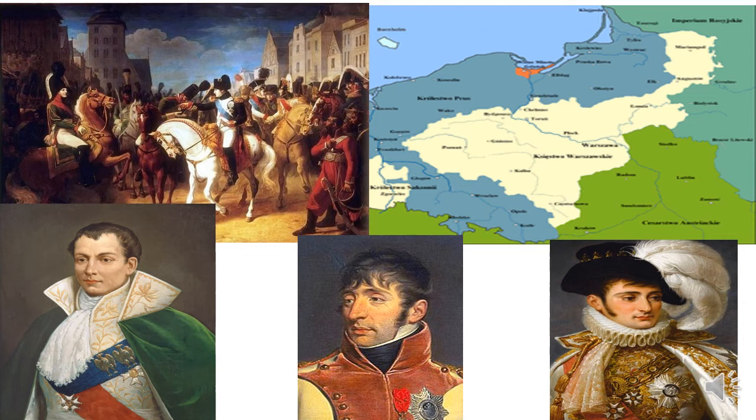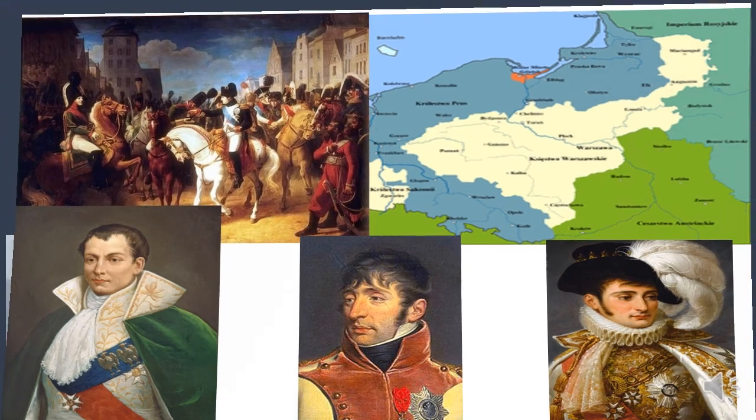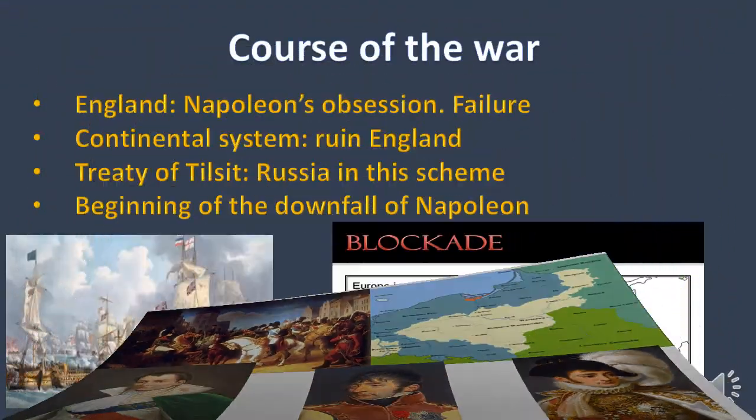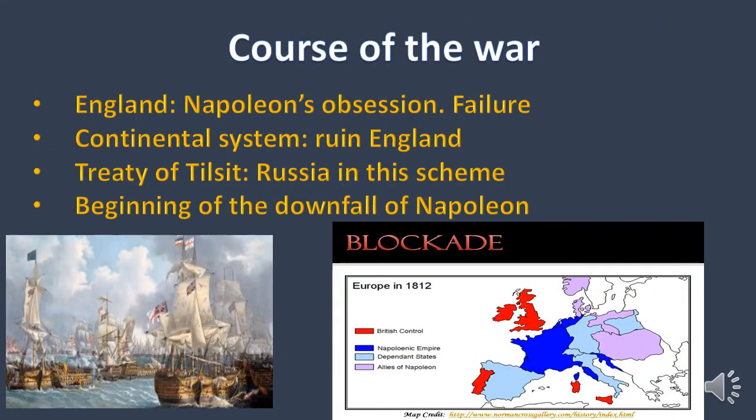Napoleon's brothers were positioned in different kingdoms. For example, Louis was positioned as the Emperor of Holland, Joseph in Naples, and Jerome in Westphalia. But obviously Napoleon's obsession was England — Great Britain.